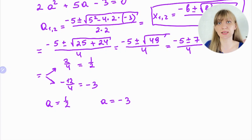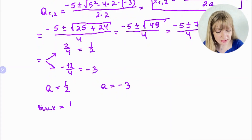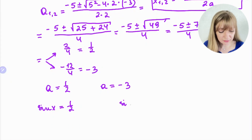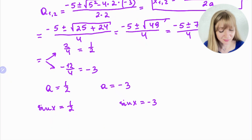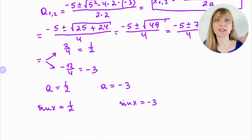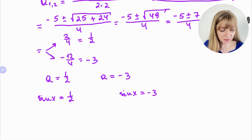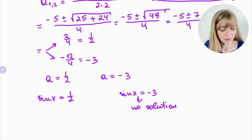Now we use the substitution back, since a = sinx. From one side we get sinx = 1/2, and from the other side sinx = −3. You need to know that both sine and cosine cannot be greater than 1 or less than −1 — they always lie between −1 and 1. So sinx = −3 is an impossible value — there is no solution for this case, because −3 is less than −1.